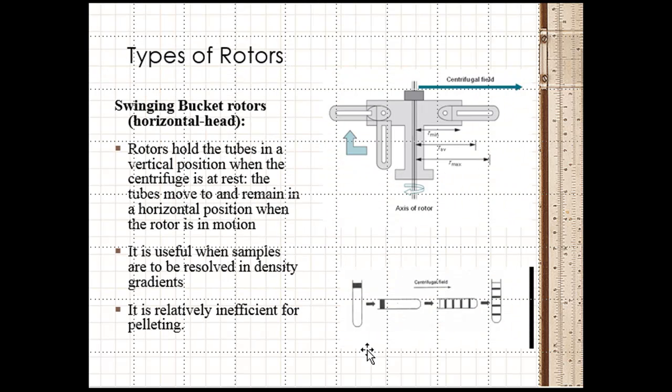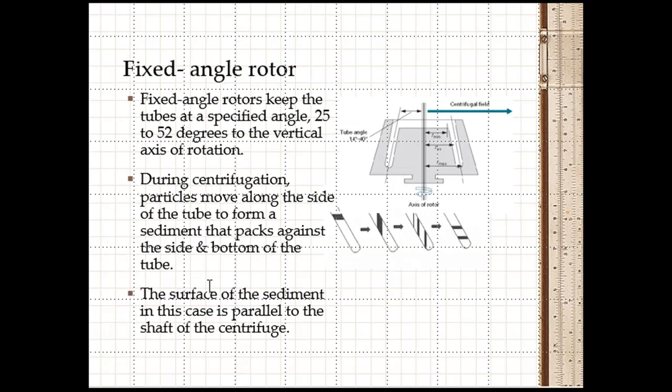There are different types of rotors available. One of them is the swinging bucket rotor. The rotor holds the tube in a vertical position when the centrifuge is at rest. The tube moves to the end and remains in the horizontal position when the rotor is in motion. It is useful when samples are to be resolved in a density gradient. It is relatively inefficient for pelleting.